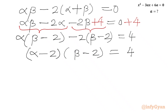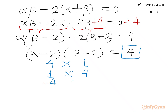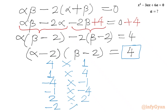Now we need to factor 4 such that the product is +4. The combinations are: 4×1, 1×4, (-4)×(-1), (-1)×(-4), 2×2, and (-2)×(-2). So we have 6 combinations in total.